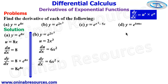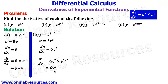So dy/dx will be 6x squared times e raised to power u, and our u is 2x cubed, so we have e raised to power 2x cubed. Simplifying, dy/dx equals 6x squared times e raised to power 2x cubed. That's all for problem b.